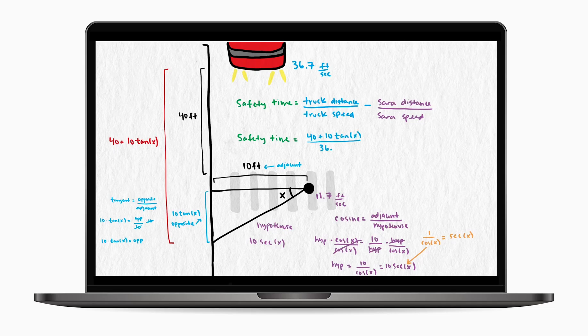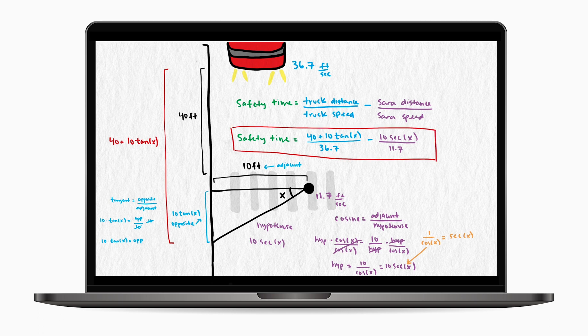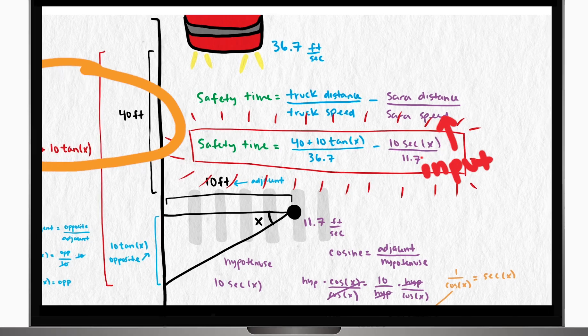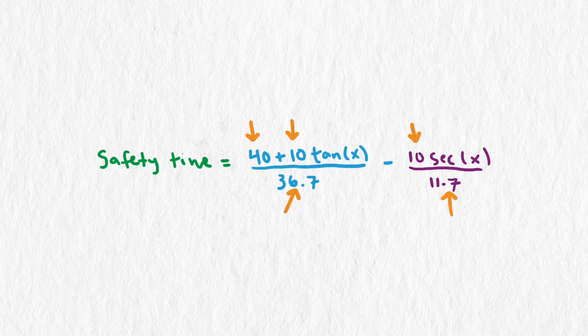Welcome back to Math the World. In the last video, we used some trig to create a function that outputs the amount of time a pedestrian is safe on the curb before a vehicle passes by. We call this the safety time, and it inputs the angle the pedestrian takes to get to the curb. We had some initial assumptions for distances and speeds.